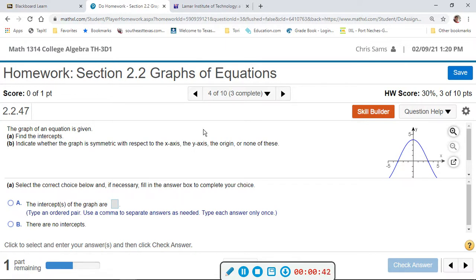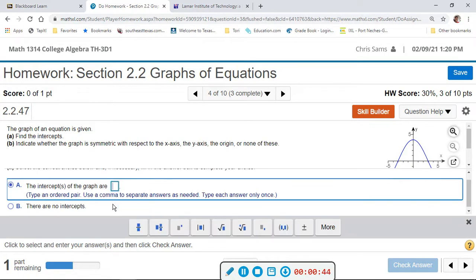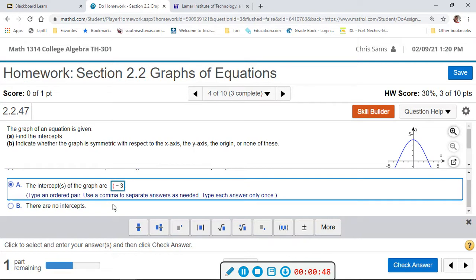Okay, so my intercepts are: my x-intercept, one of them was negative three, zero, because we went left three and then zero. My other x-intercept was positive three, zero. And then the y-intercept was zero, four—you stay at the origin and you go up four.